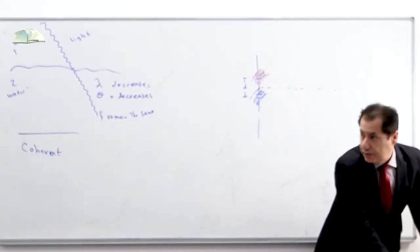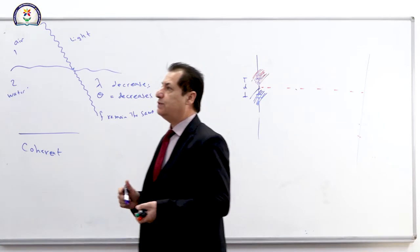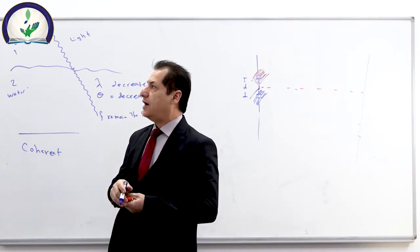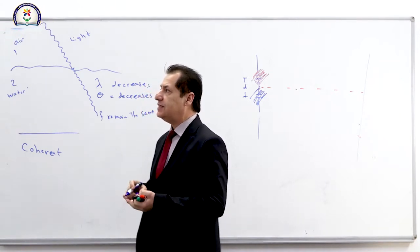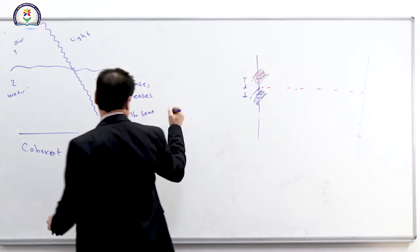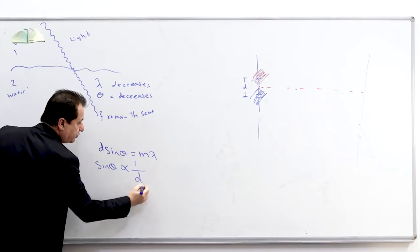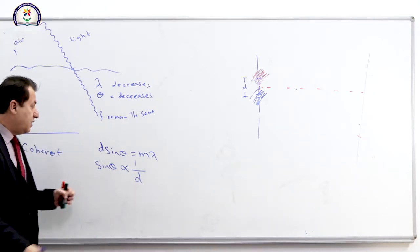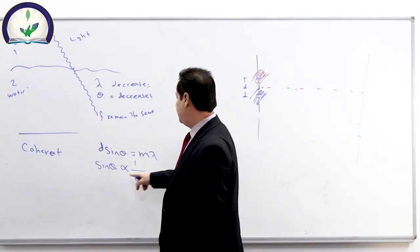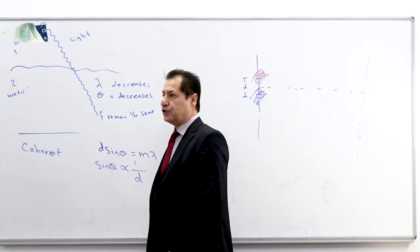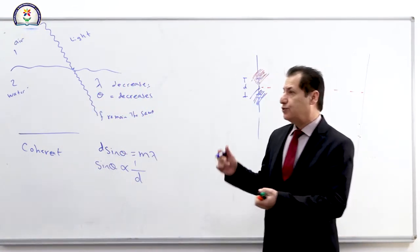Question number eight: an interference pattern is formed using green light. If the two slits move further apart, will the separation of the bright fringes decrease, increase, or remain unchanged? Since d·sinθ = mλ, sine theta is inversely proportional to D. So as D increases, the angle decreases, and the separation of fringes decreases.